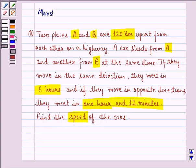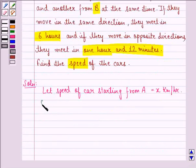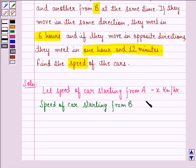Now let us start off with the solution to this question. Let speed of car starting from point A be x km per hour and speed of the car starting from B equal to y km per hour.